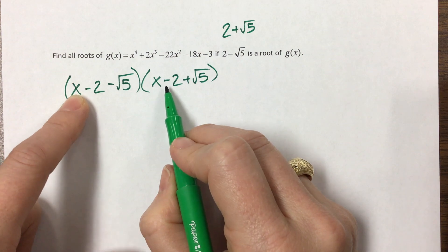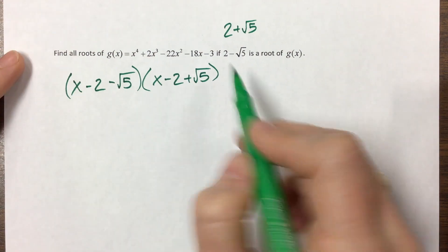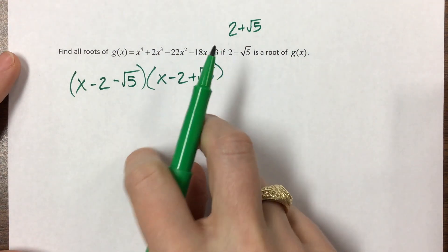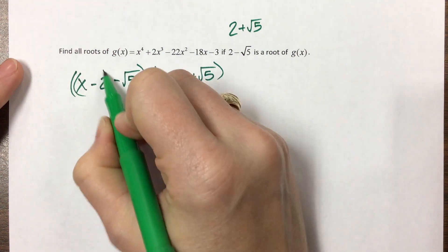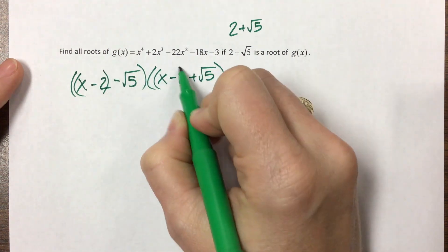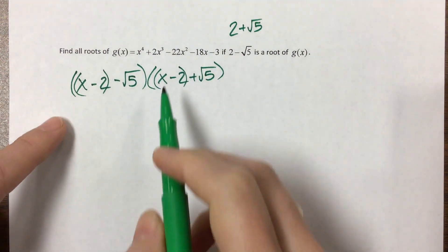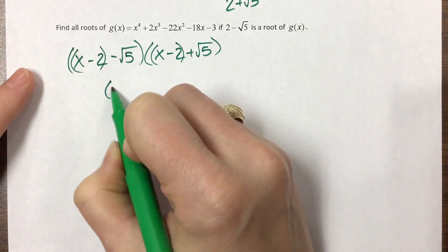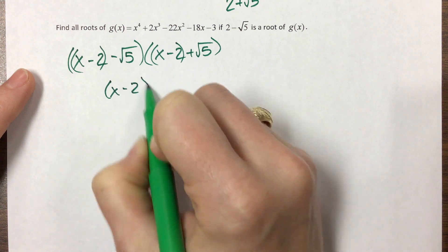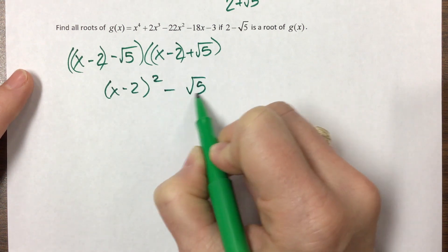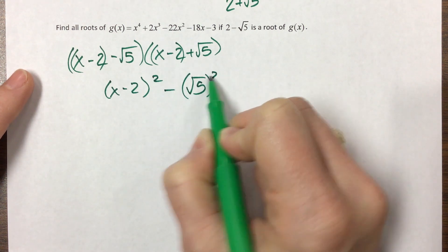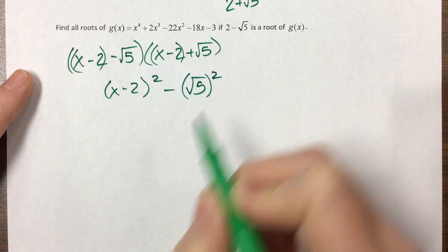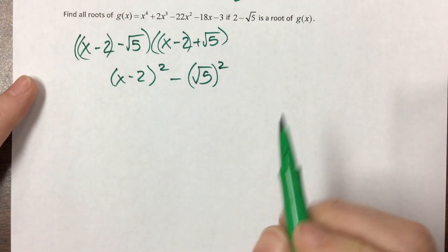There is a previous video that shows two options for how to do this, and I always do it this way because I forget the other. But help yourself — do whatever you like best. This is a minus b times a plus b, which is a squared minus b squared.